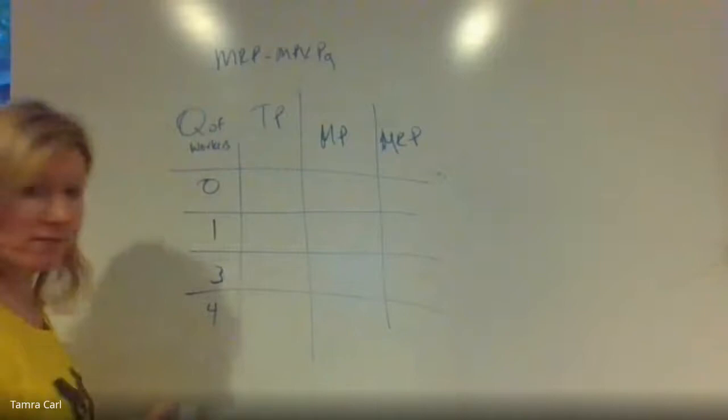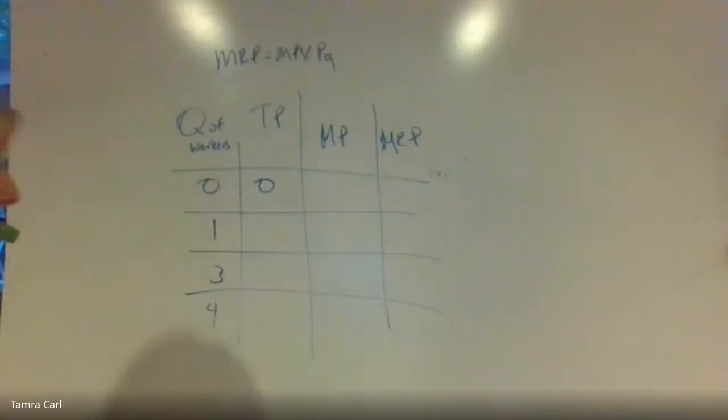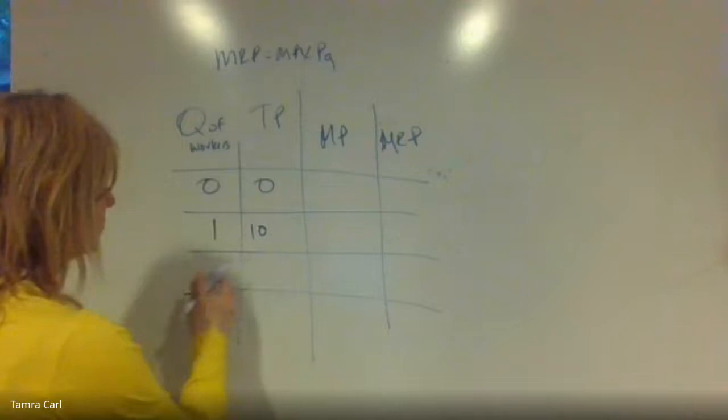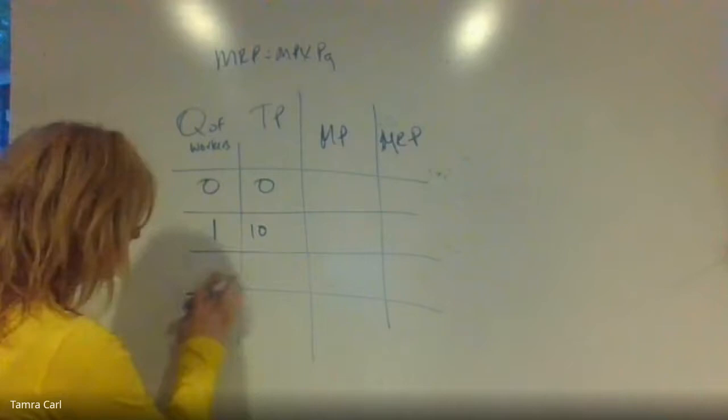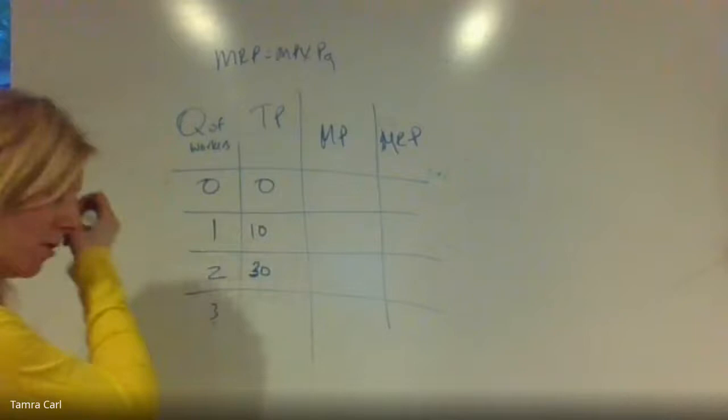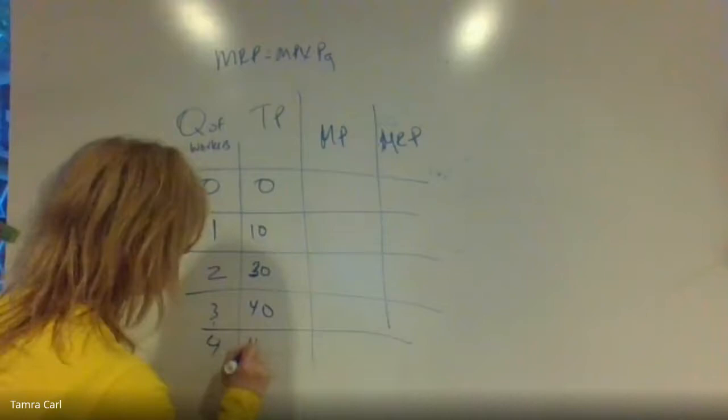With four workers: zero workers produce zero output, one worker produces 10, two workers produce 30, three workers produce 40, and the fourth worker brings total product to 45.